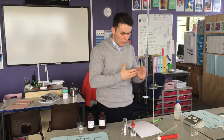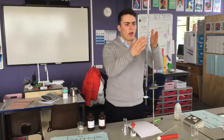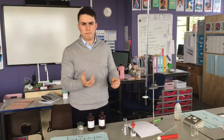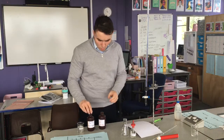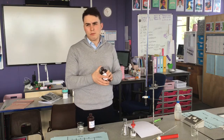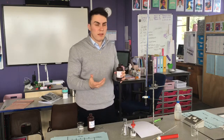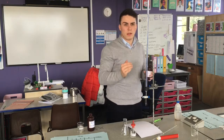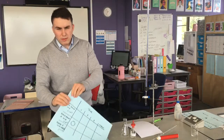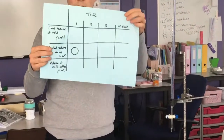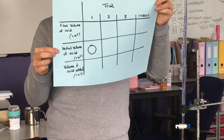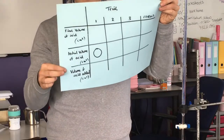Let me quickly run through the equipment. I've got a burette here that runs from 0 to 50, and I've filled that with my hydrochloric acid and put it at the 0 mark. I could start elsewhere, but just to save my maths I always start at 0. In my table of results, for my initial volume of acid I have put 0. We're going to look for the final volume of acid and the volume needed.